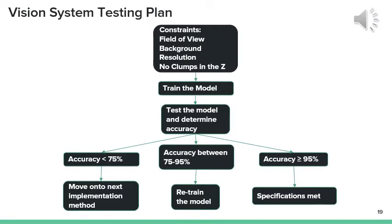This is our testing plan for our cascading classifiers. First, we're going to train the model with our given constraints. We're going to test the model to determine the accuracy. If the accuracy is below 75%, we're going to move on to the next implementation method. If it's between 75 and 95%, we're going to retrain the model with new parameters. And if it's above 95%, the specification was met and we will move on from there.